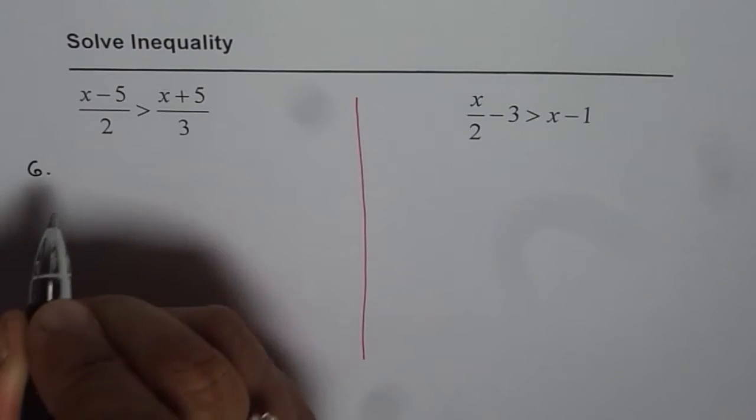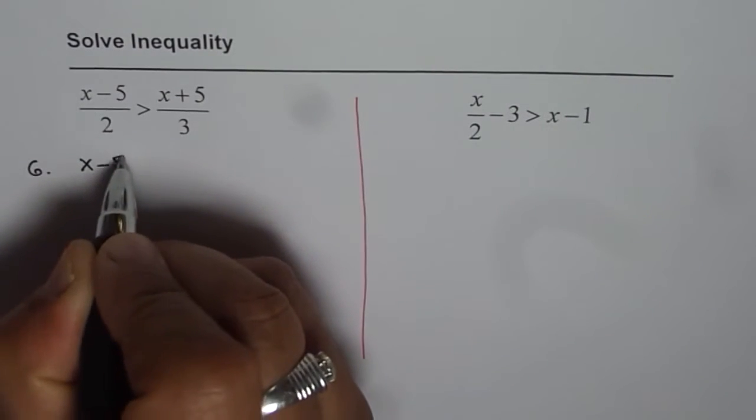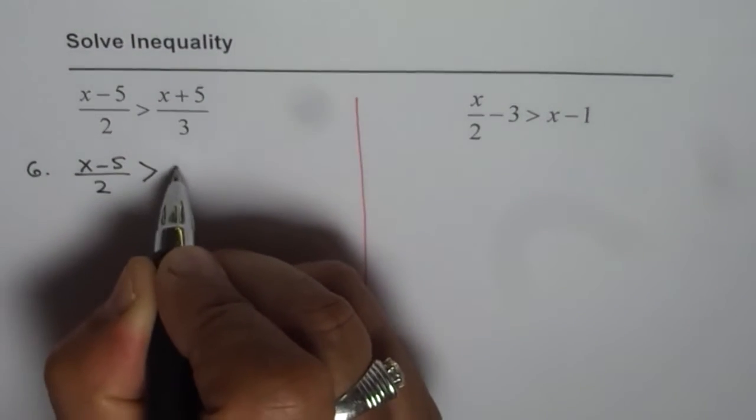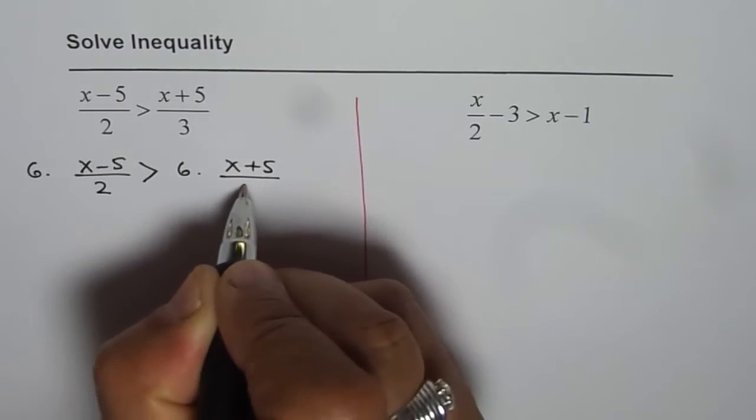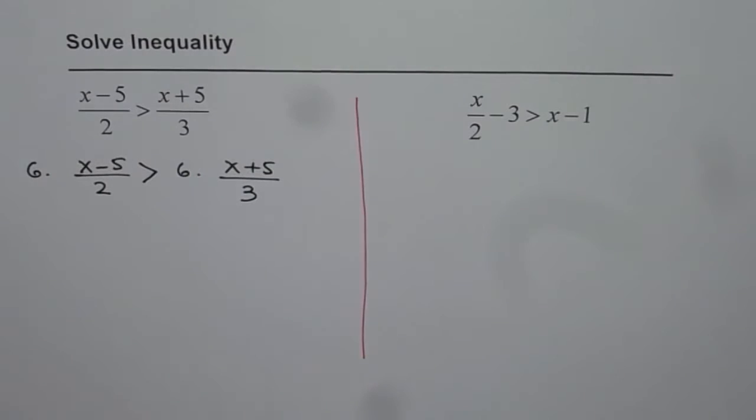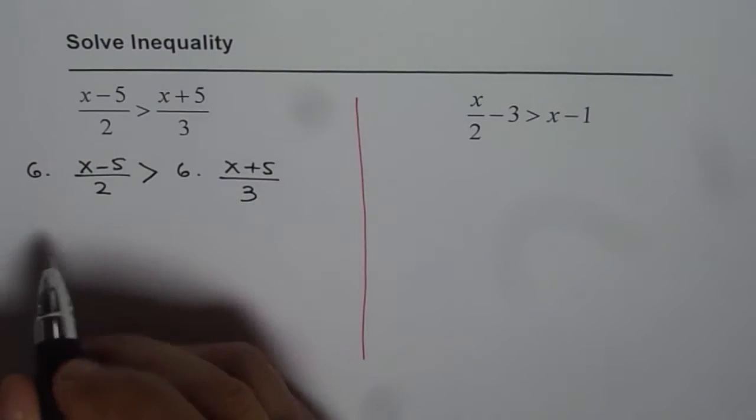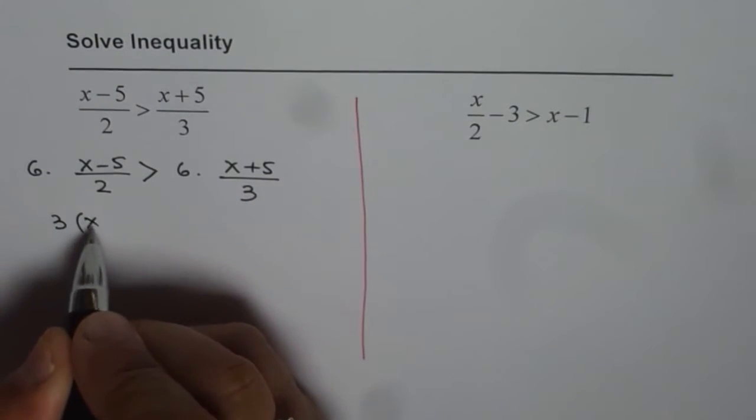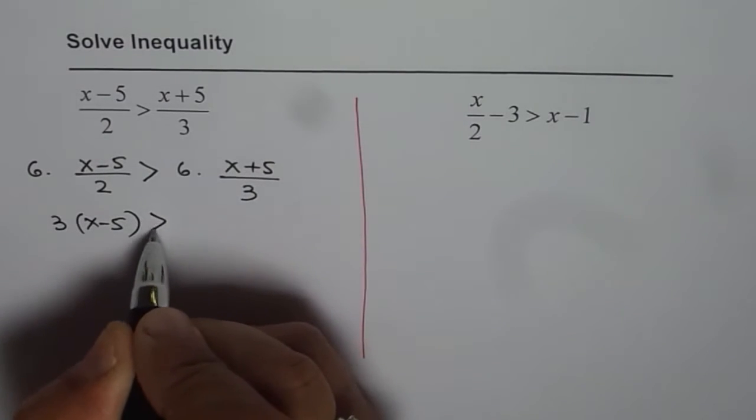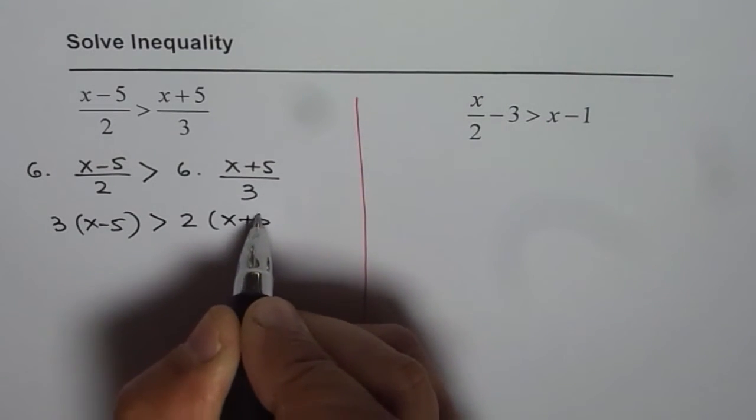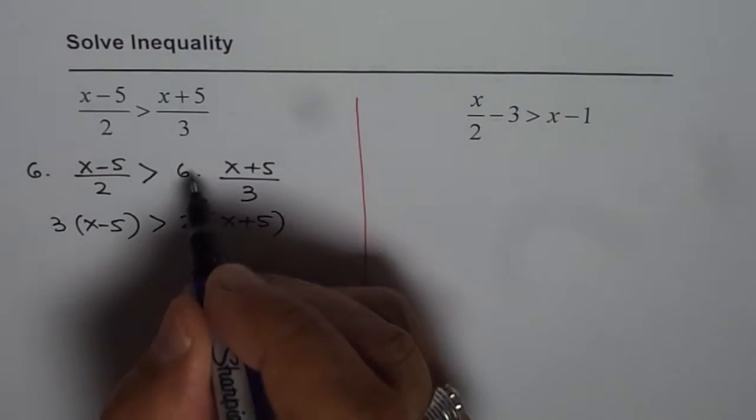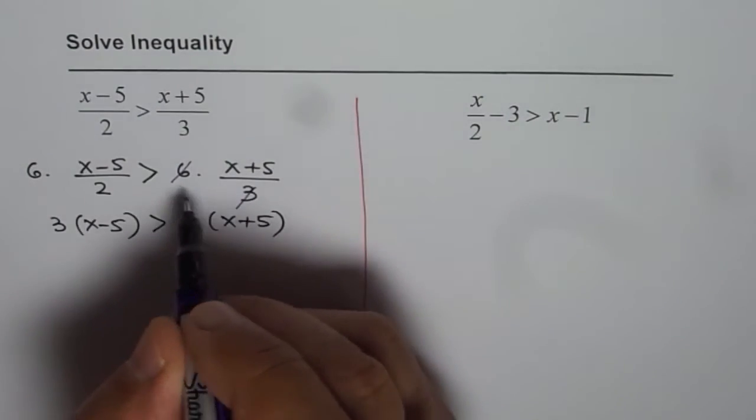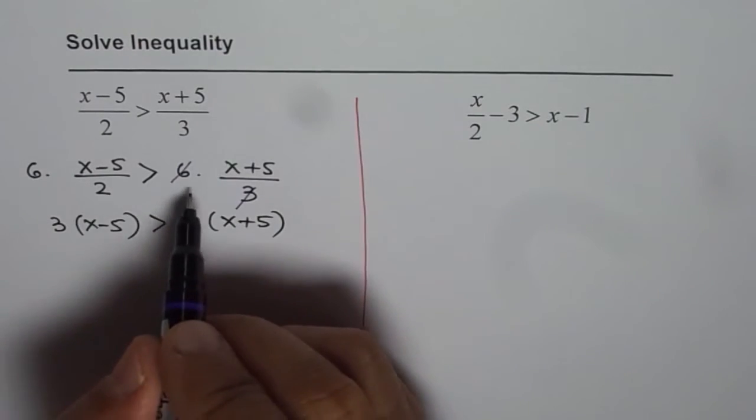What do we get? 6 times x minus 5 divided by 2 greater than 6 times x plus 5 divided by 3. Now it goes 3 times. So it is 3 times x minus 5 greater than 2 times x plus 5. So that is how you can avoid fractions. So we avoided fractions by multiplying both sides by 6.